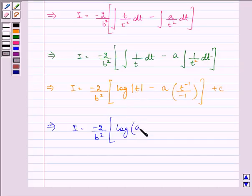In the place of t now we have a plus b cos x minus a upon t. So it will be plus over here now, minus minus will become plus a upon a plus b cos x plus c.